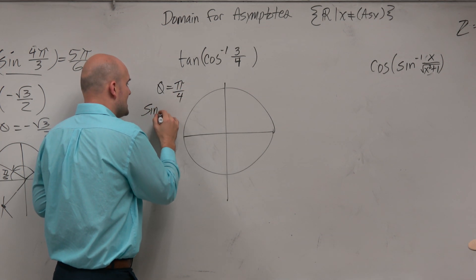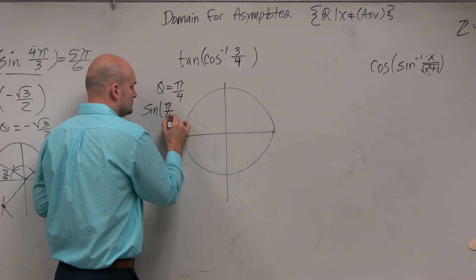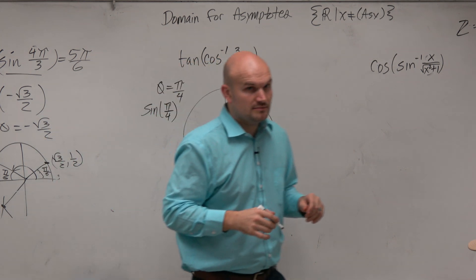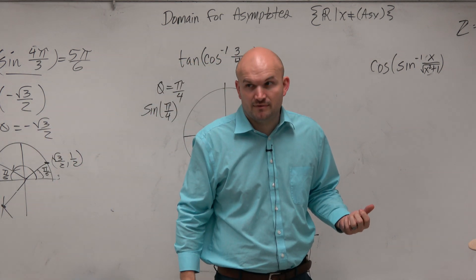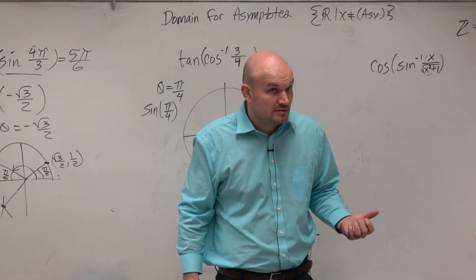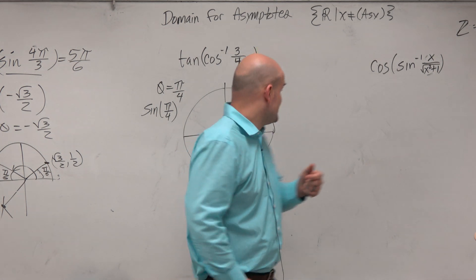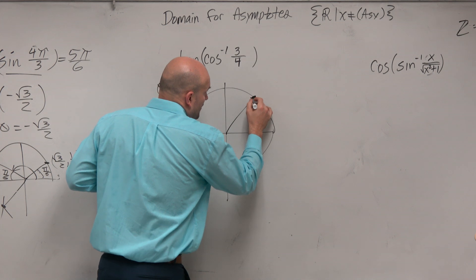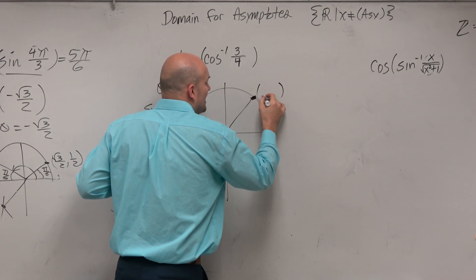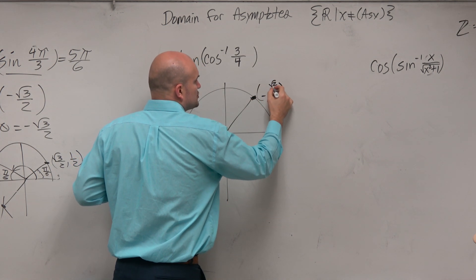If I say, what is the sine of that angle? How many answers do we have? One. Sine of pi over 4 is square root of 2 over 2. Because at pi over 4, there is only one coordinate point, and there's only one y-coordinate, which is square root of 2 over 2.